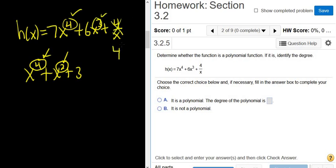Because if you rewrite this, you can bring the x upstairs, and it becomes 4x^(-1). And you're not allowed to have a negative exponent.